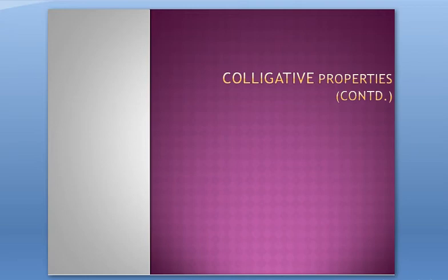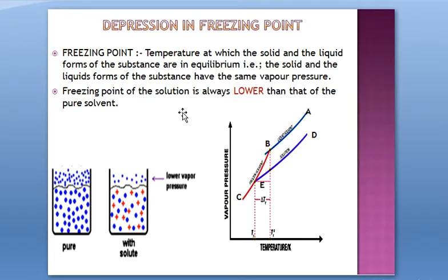Continuing with the colligative properties, today we'll do our fourth and last colligative property, which is depression in freezing point. Freezing point as such is not a colligative property — depression in freezing point is a colligative property because it directly depends on the number of particles of the solute dissolved in the solvent.